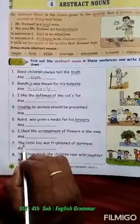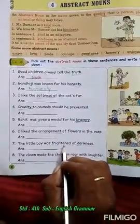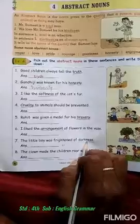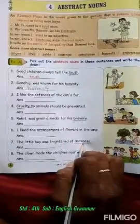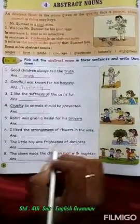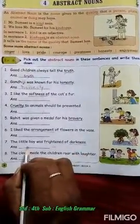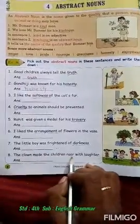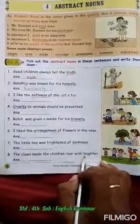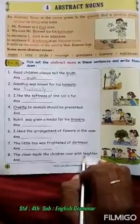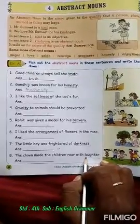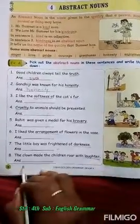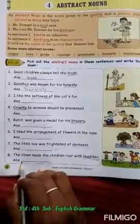The little boy was frightened of darkness. Darkness is a quality. So you write the answer: darkness. The clown made the children roar with laughter. In the last sentence, laughter is a quality. So in the answer place you write laughter.